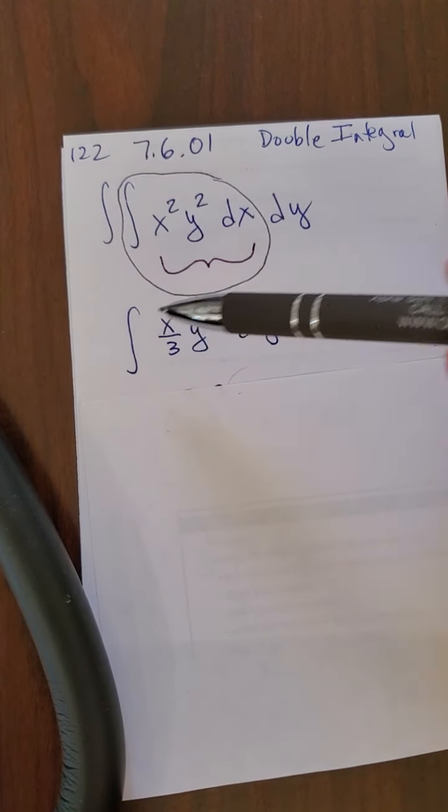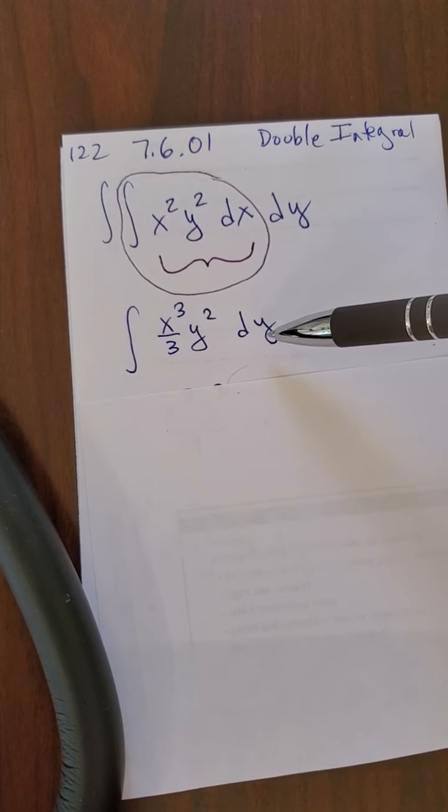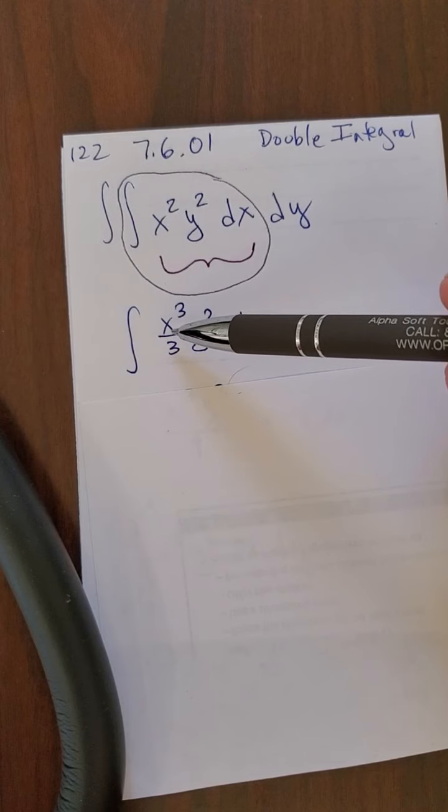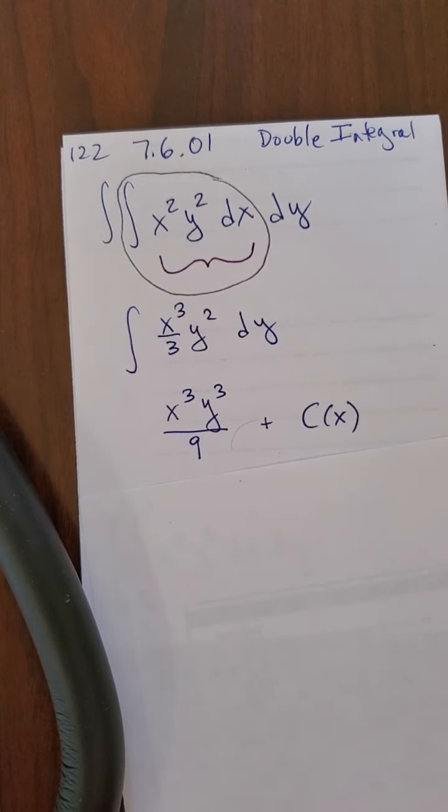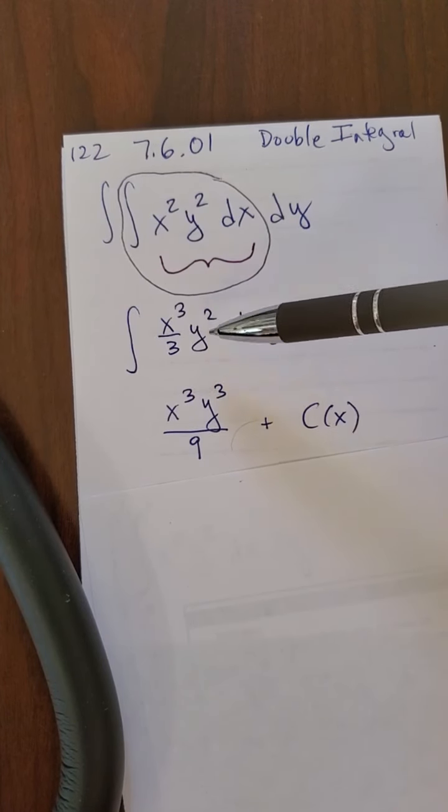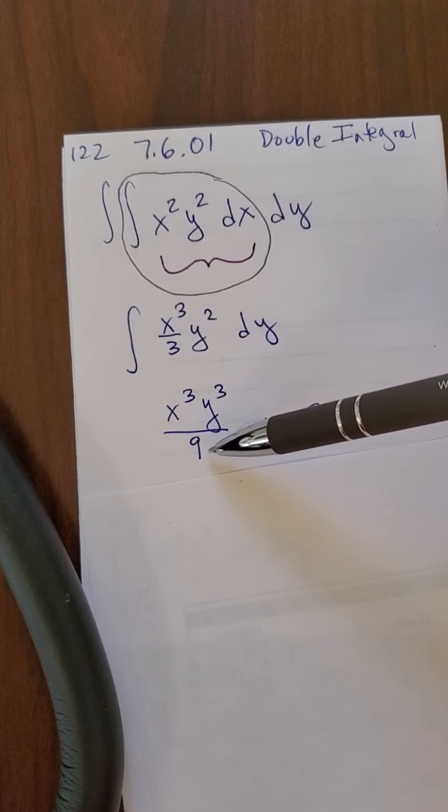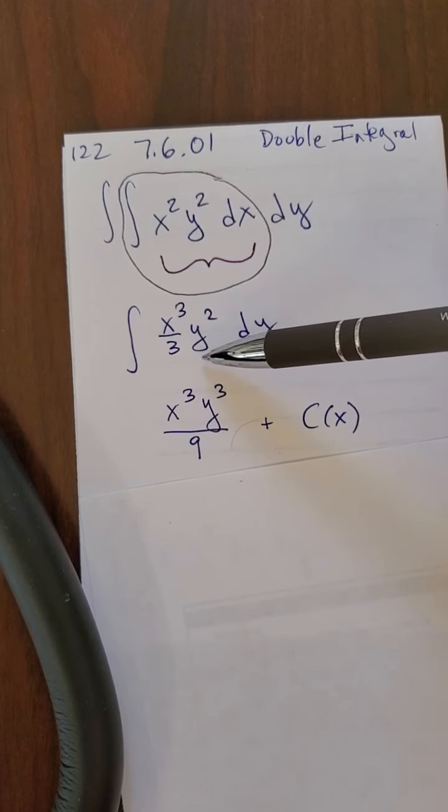Now I integrate this guy dy. But again, once I'm integrating dy, that means I'm going to treat the x like it's a constant. So the x cubed over 3 is just going to come down for the ride. And what's going to happen is that, well, y squared is going to become y cubed over 3, and there's a 9 there because the 3 that's already under the x and the new 3 that's going to come from the y is my thing.